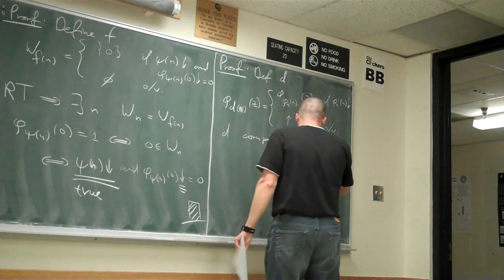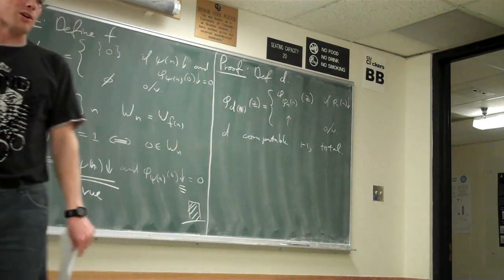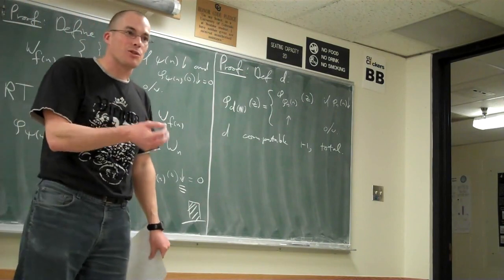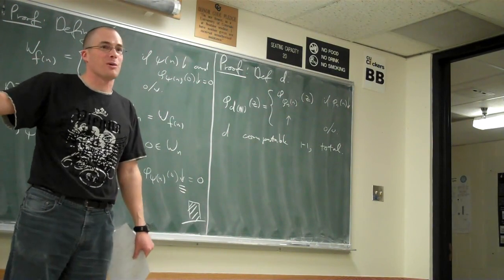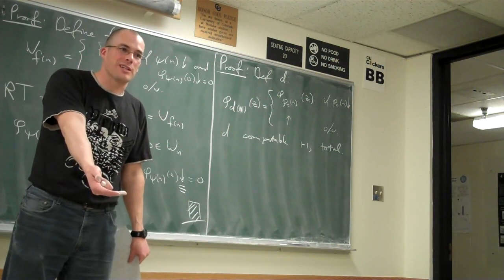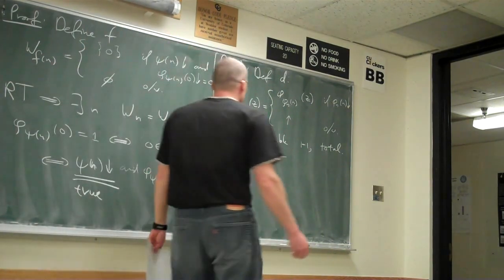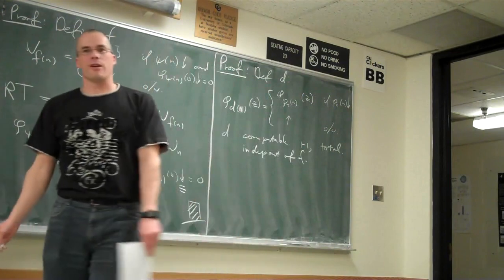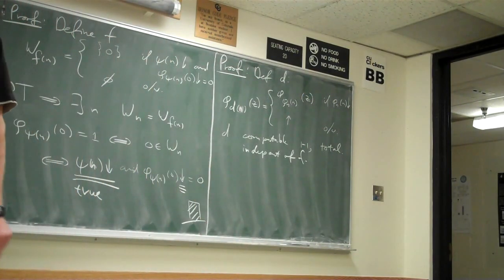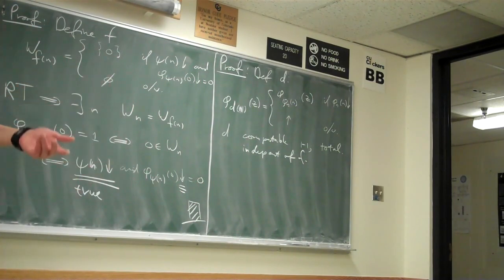D is also total, because the description is easy: on input n, you just compute the following Turing machine — which in many cases won't halt, but finding which Turing machine it is always succeeds, making d a total function. Also, d is independent of the function F. F is the computable function we're trying to find a fixed point of — this part of the proof does not depend on F, so for every F you use the same d.